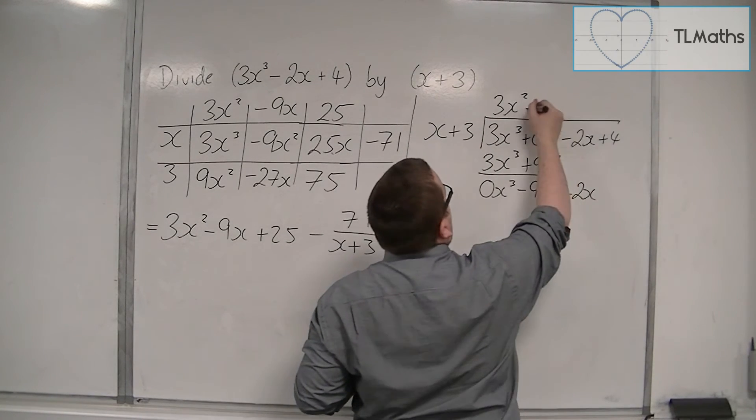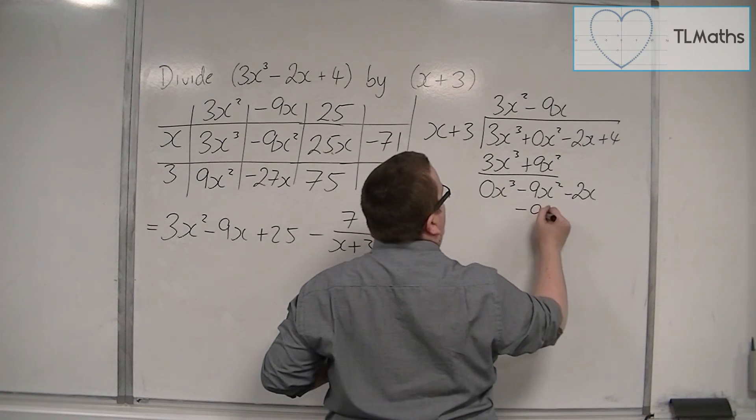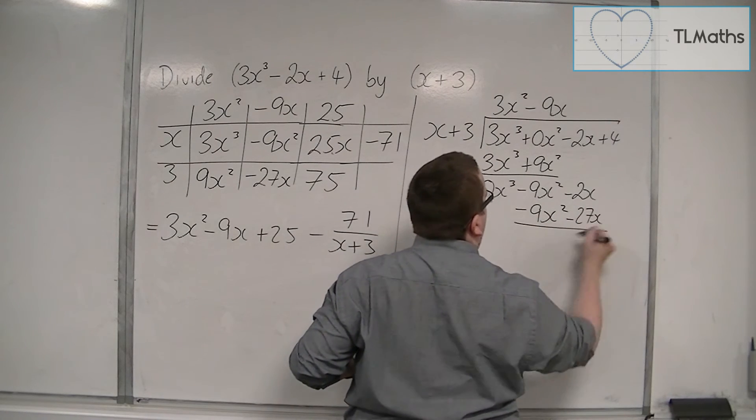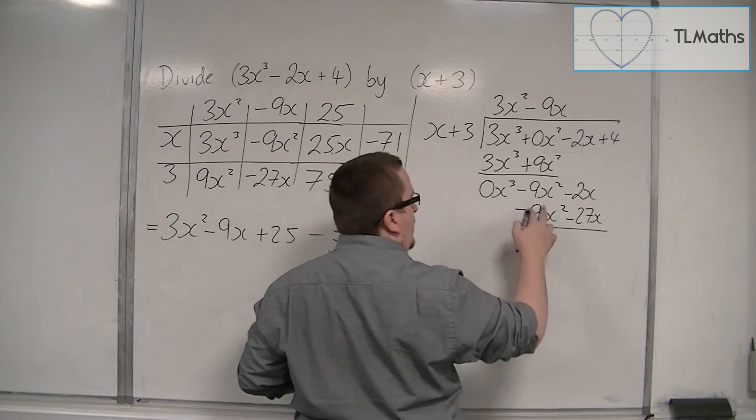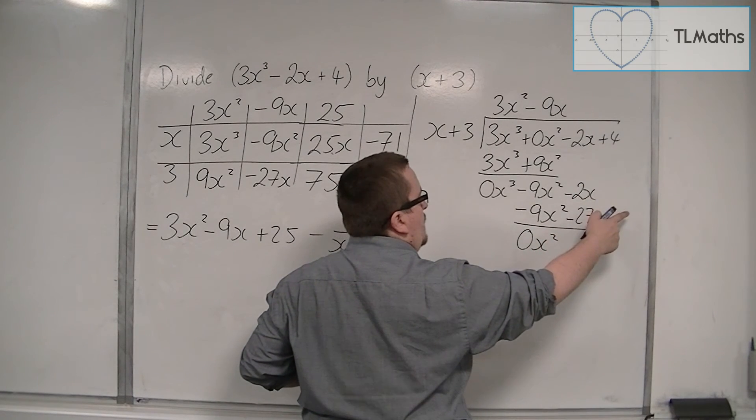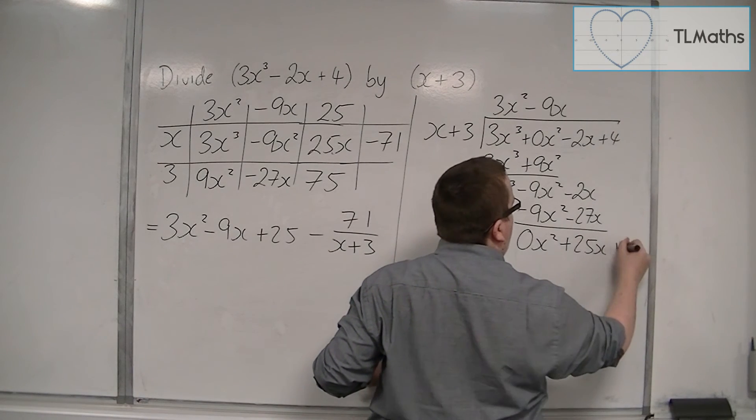x into minus 9x squared goes minus 9x. Minus 9x times these two terms is minus 9x squared take away 27x. Then I've got minus 9x squared take away minus 9x squared is 0x squared. Minus 2x take away minus 27x is plus 25x. Bring the next term down.